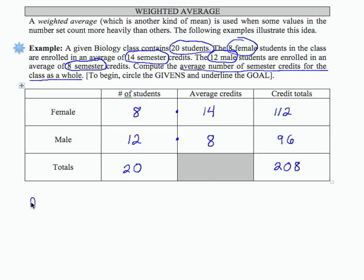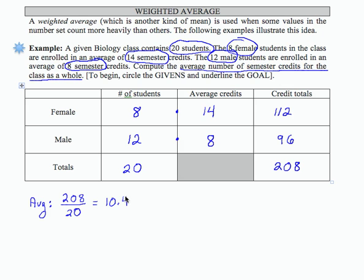Now to compute the average, I'm going to take the total credits for the class, which is 208, and divide that by the number of people in the class, which is 20, and that gives me an average of 10.4.